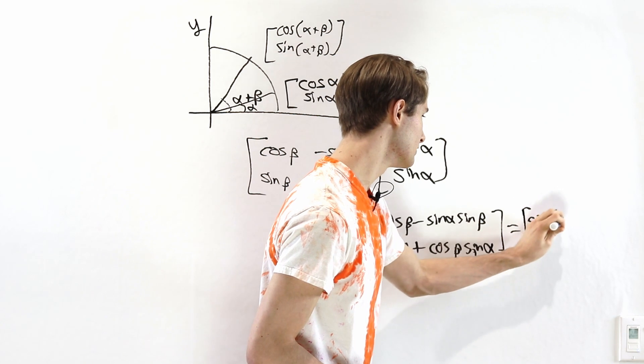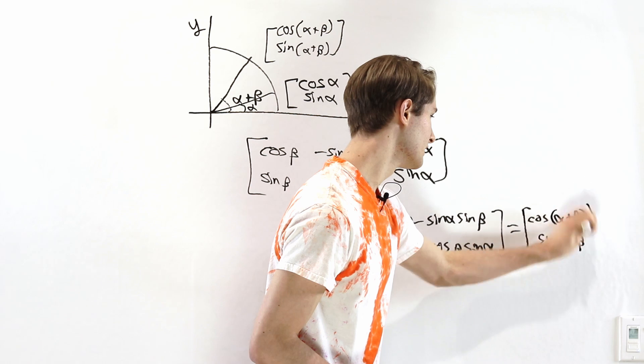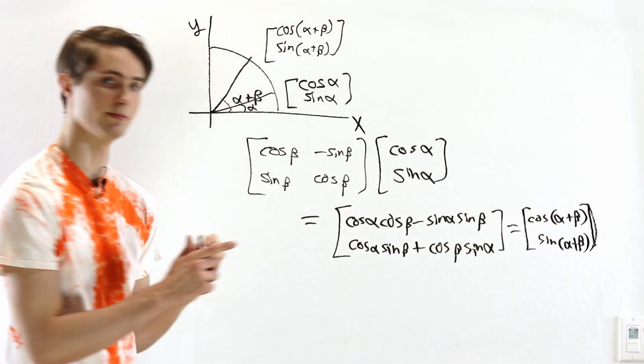And so we know this is rotating alpha plus beta degrees. That's going to give us cosine alpha plus beta and sine of alpha plus beta. So just like that, we get our angle sum formulas.